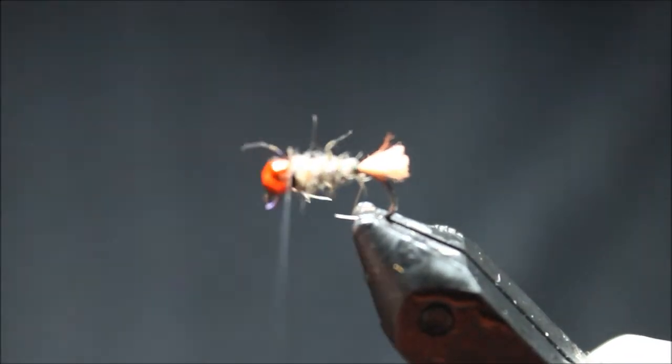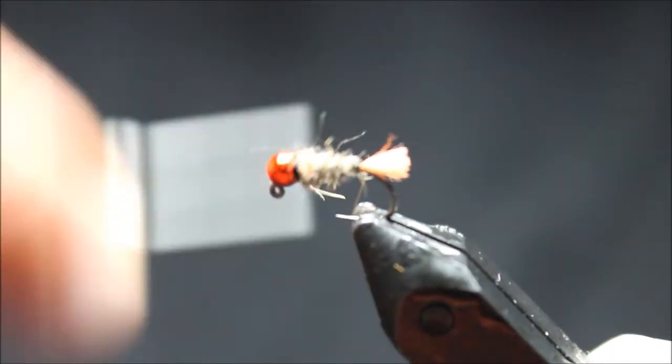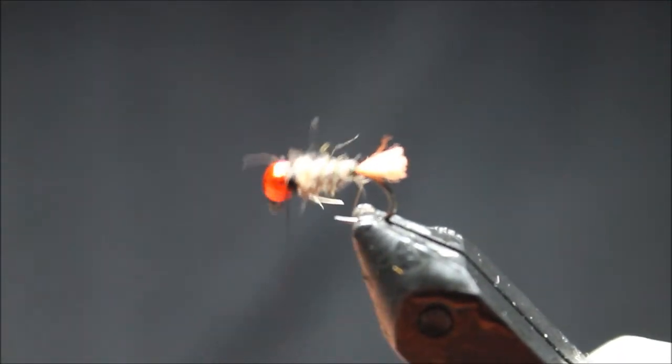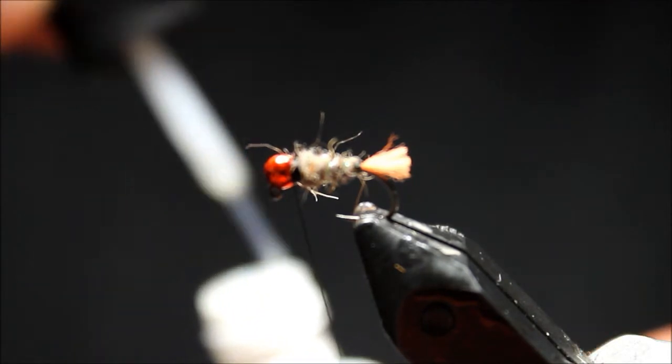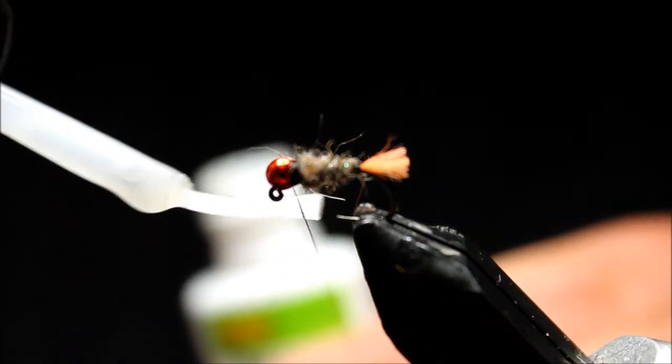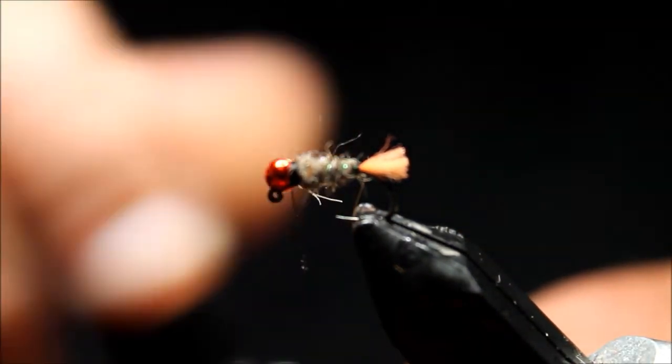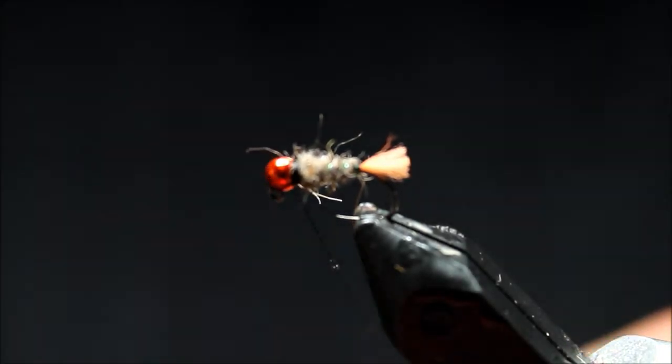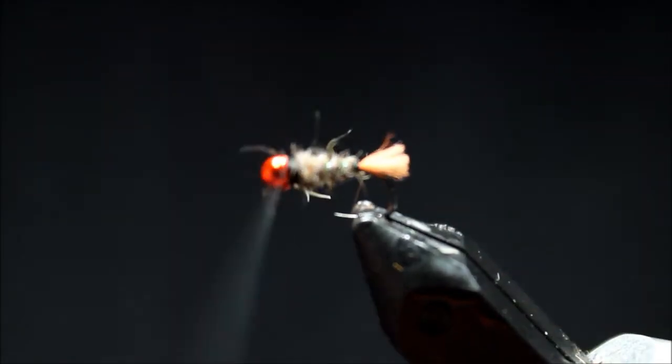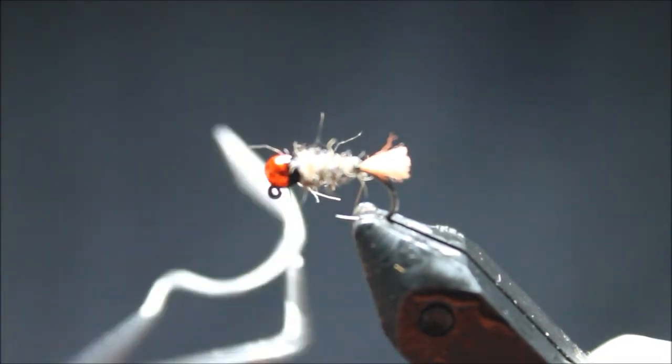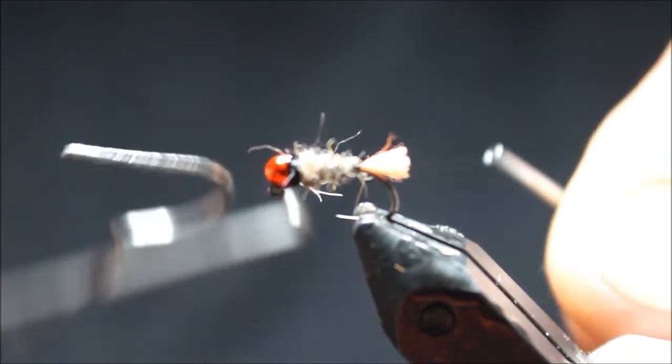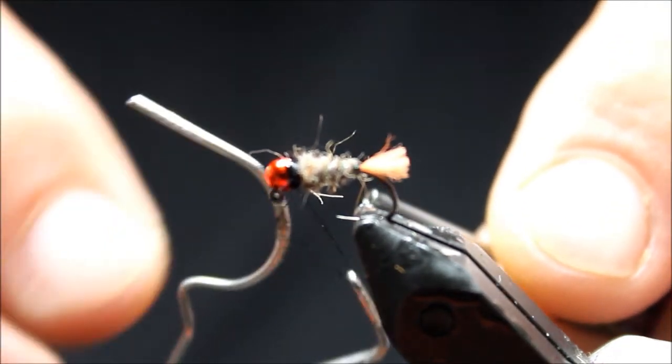And I'm actually going to build a little bit of a thread collar with this black thread to create a segmentation from the bead to the body. A little zap-a-gap brush on the end of my thread and a few whip finished turns and that will finish that fly.